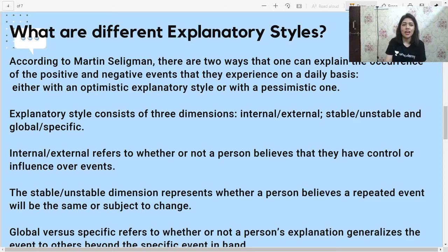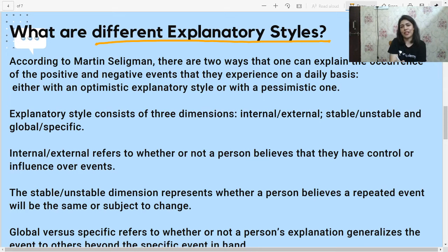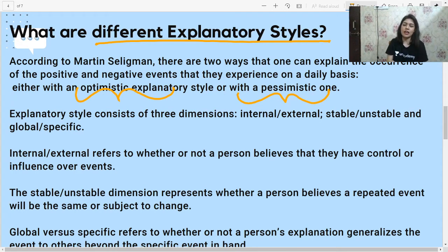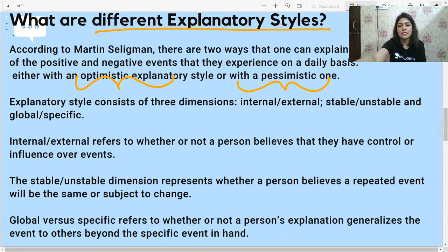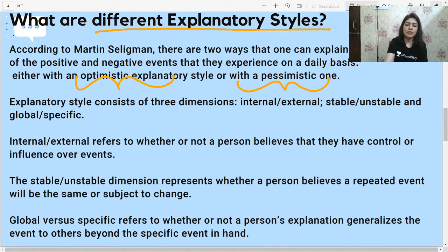According to Martin Seligman, there are two types of explanatory style. One is the optimistic explanatory style and the other is the pessimistic explanatory style. In an optimistic explanatory style, you naturally tend to look at life in a more positive light, whereas in a pessimistic style, you look at life in a more negative light. These explanatory styles also come with three dimensions. The first one is internal or external.